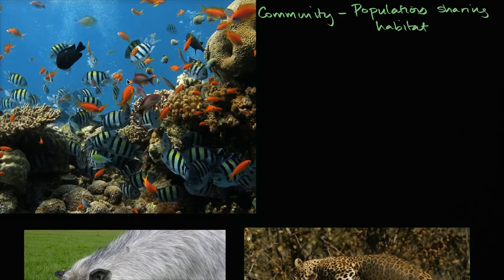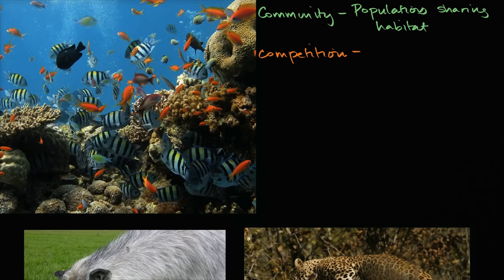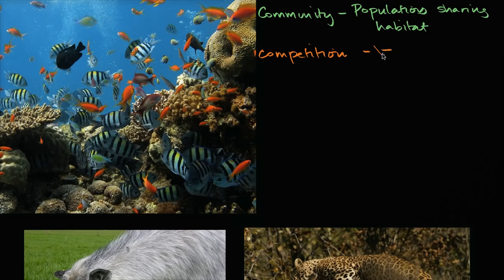The first interaction often thought about is the notion of competition. This is when different populations, different species, are competing for the same resources. You can imagine a forest where different populations of plants are competing for sunlight, water, and nutrients in the soil. Even in this picture right over here — a community of fish, sea anemones, and coral sharing the same region — many could be in competition. You'll often see this represented as a minus/minus, or negative/negative sign.